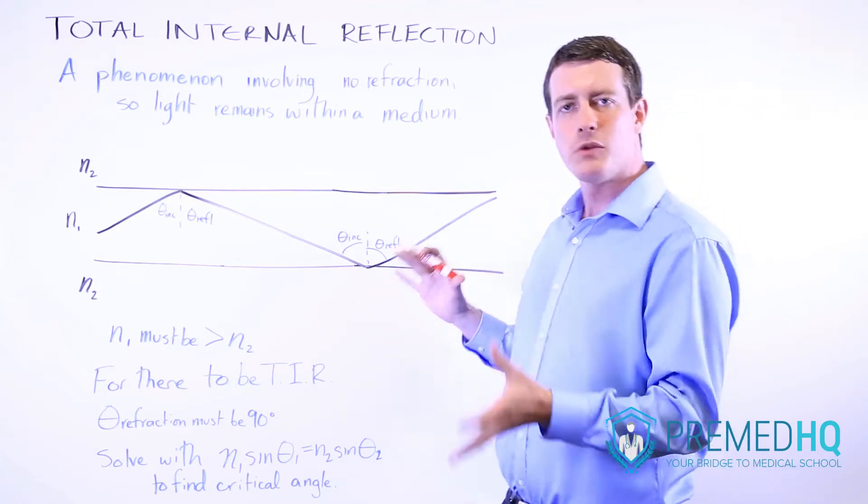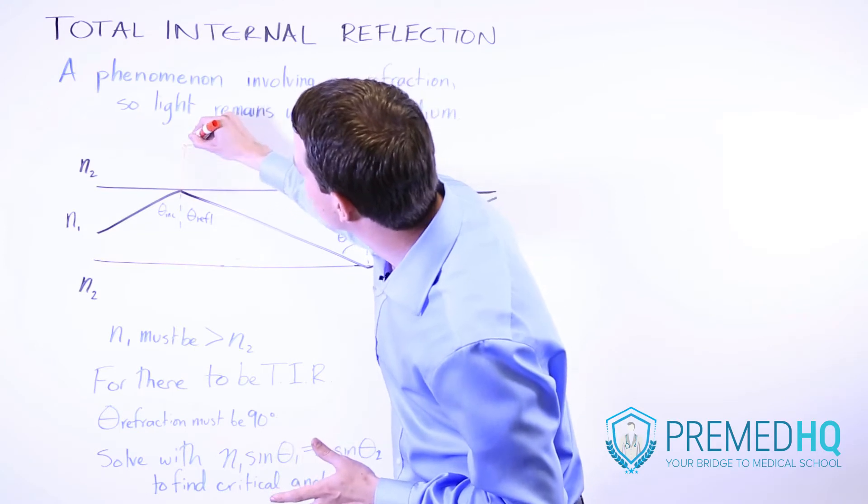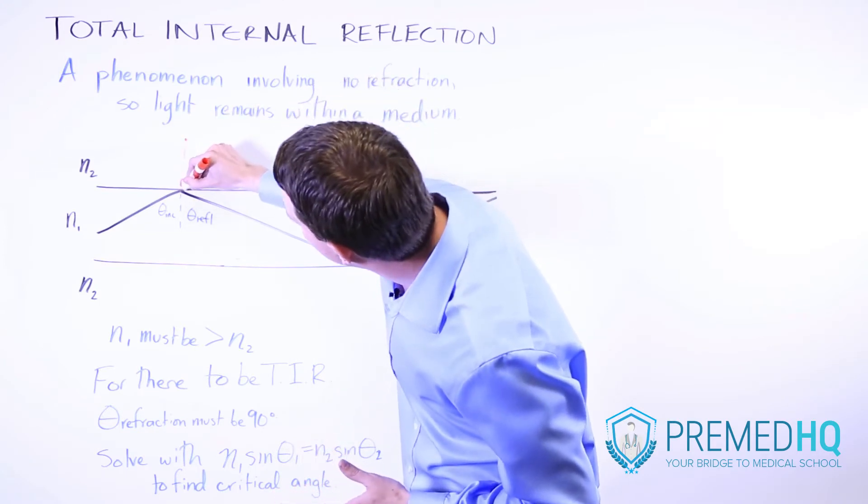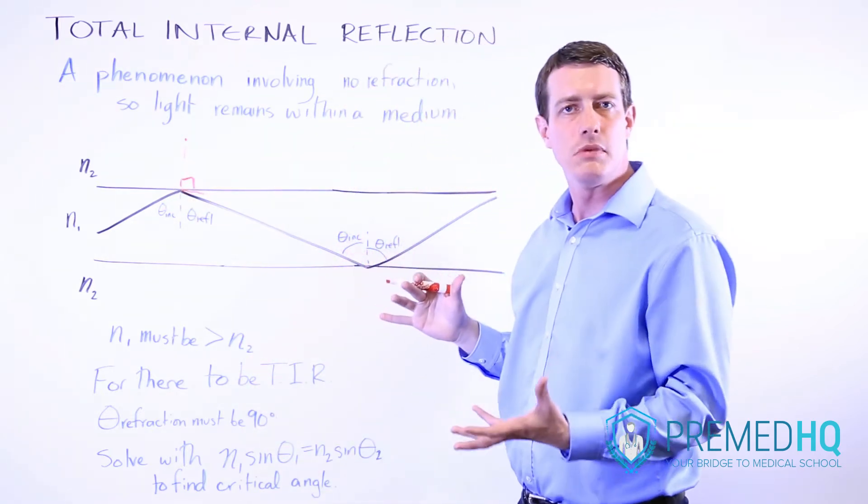First, the only way you can avoid having any refraction is if the angle of refraction is 90 degrees or greater. So if you imagine that, then that means the light will be staying within the medium.